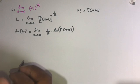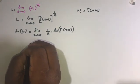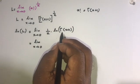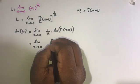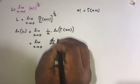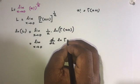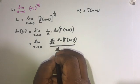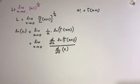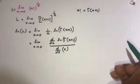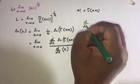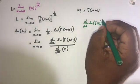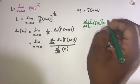Now, according to L'Hôpital's rule, we can take the derivative of both the numerator and denominator. So we can write the derivative of natural log of gamma of x plus 1 over the derivative of x. We know the derivative of the natural log of the gamma function is the digamma function.